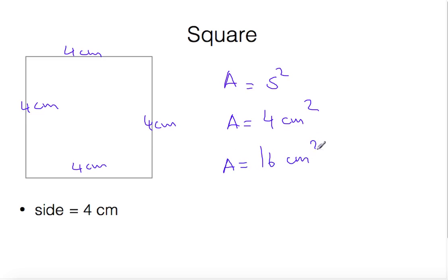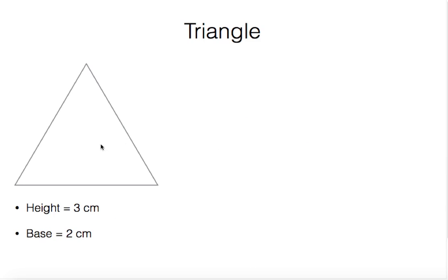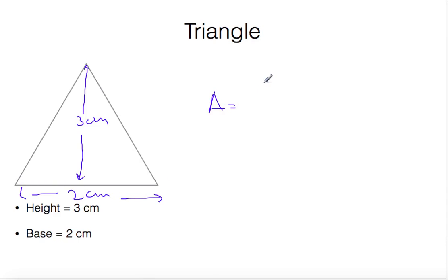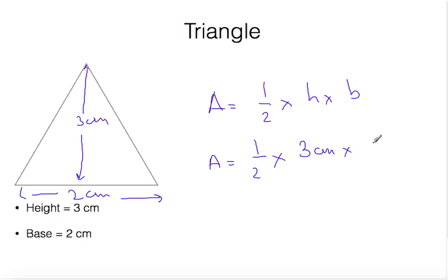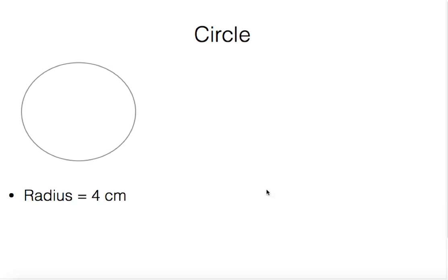The next example is a triangle. The height is given as three centimeters and the base is two centimeters. Area equals one-half times height times base, so one-half times three centimeters times two centimeters. The twos cancel, giving an area of three centimeters squared.